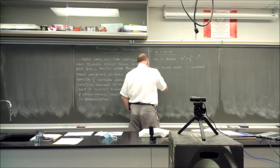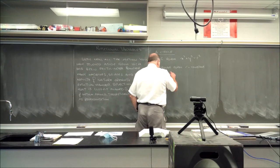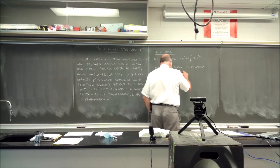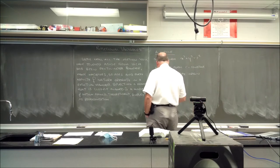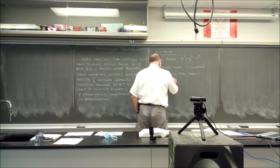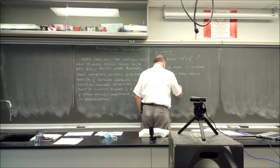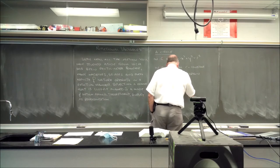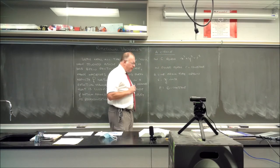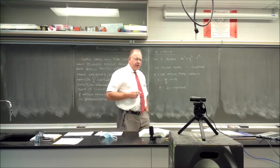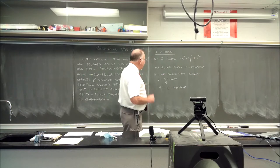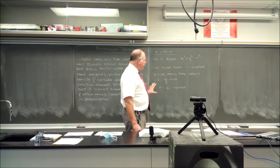A line through the origin: in Cartesian form y = mx; in polar form θ equals a constant. They're pretty close. Where the trouble really starts is when you move off the origin — you get a complex equation that gets complicated for many cases.